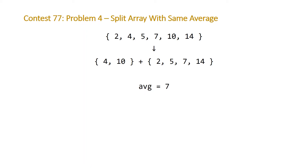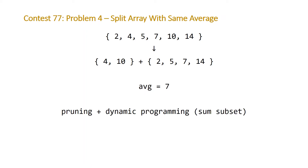It's a pretty easy problem to understand, but it's pretty involved in terms of what we have to do to verify whether this is possible. There are two steps to the algorithm: the first is pruning, and the second is dynamic programming. The dynamic programming part is very similar to a famous algorithmic problem called the sum of subsets. But first, let's start with pruning.